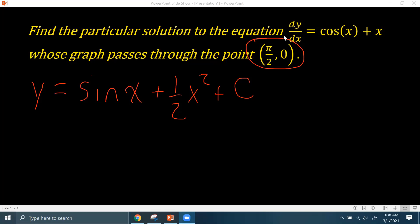So what you do is you substitute your x value in or whatever the independent variable is. So sine of π/2 plus one half (π/2) squared plus c. And the answer should come out to be your y value, which is zero in this case.